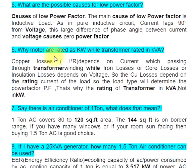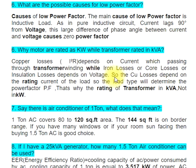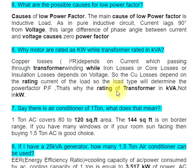Question 6b: Why are motors rated in kW while transformers are rated in kVA? Copper losses (I²R) depend on the current passing through transformer windings, while iron losses or core losses depend on voltage. The copper losses depend on the rating current of the load, so the load type determines the power factor (PF). That is why transformer rating is in kVA, not kW.